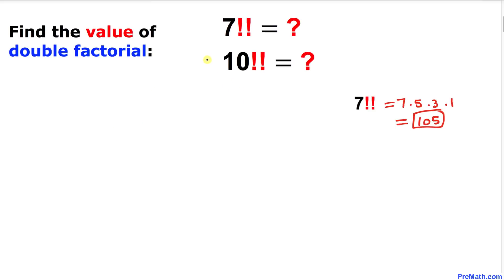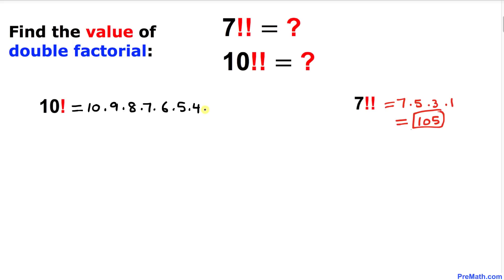Now let's take care of the double factorial of 10. Let's go over 10 factorial first. So 10 factorial could be written as 10 times 9 times 8 times 7 times 6 times 5 times 4 times 3 times 2 times 1. Pretty simple, isn't it?